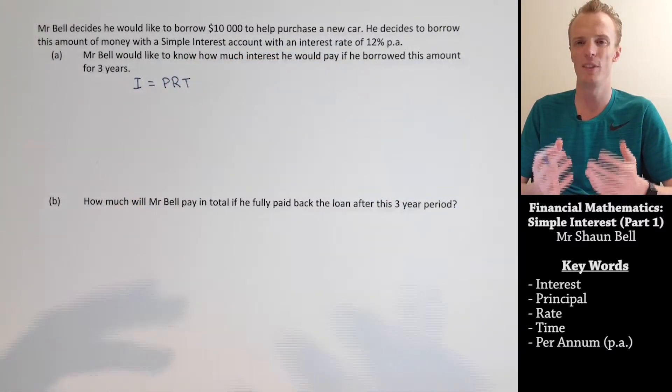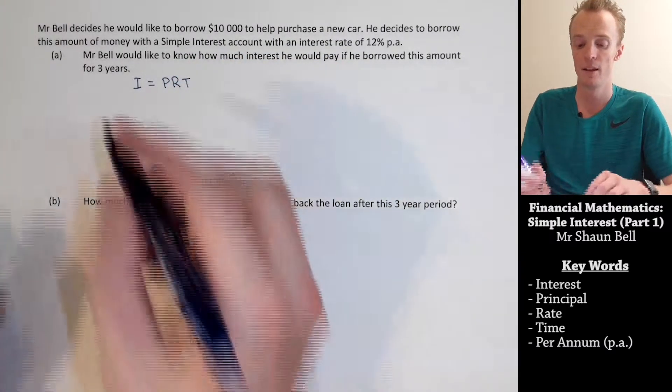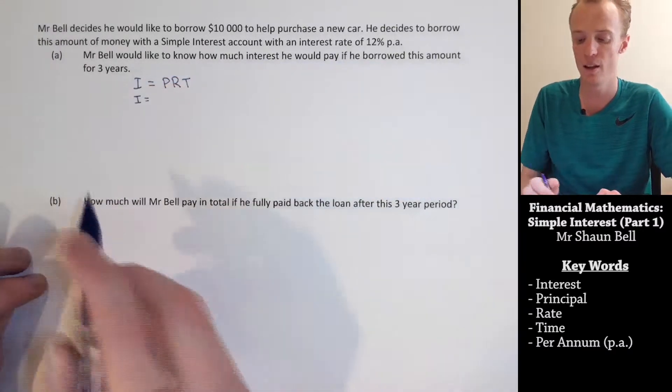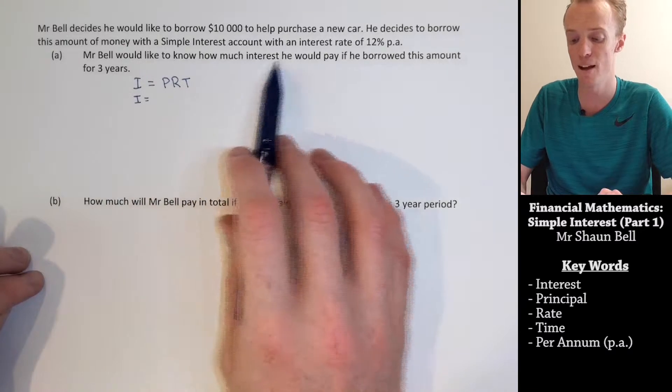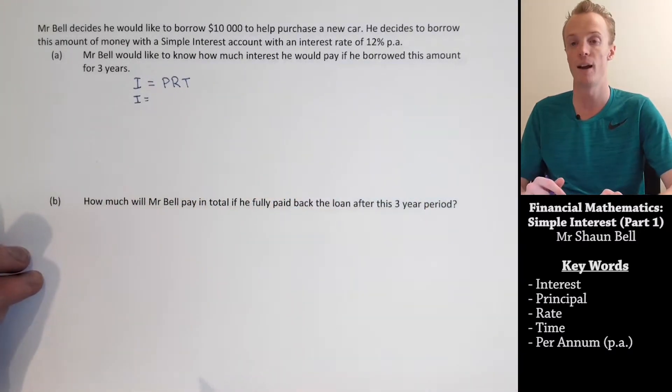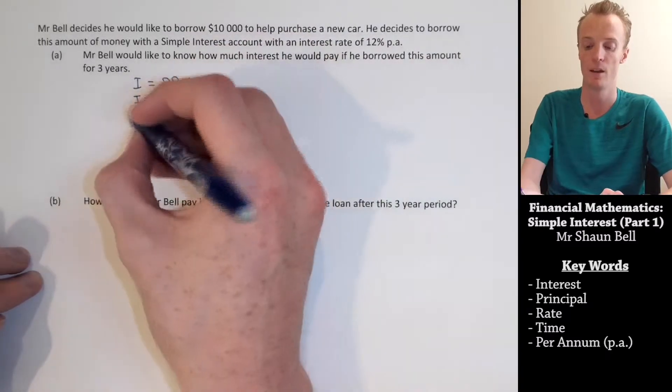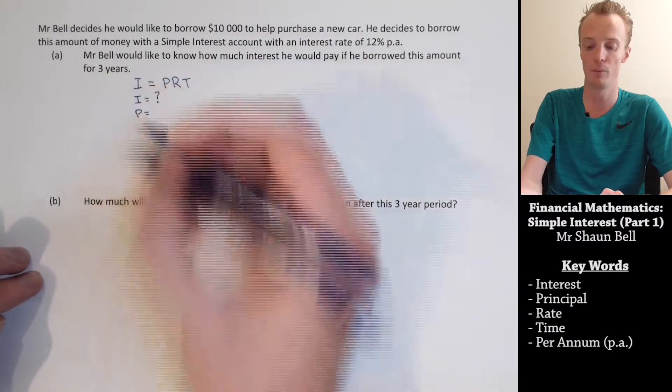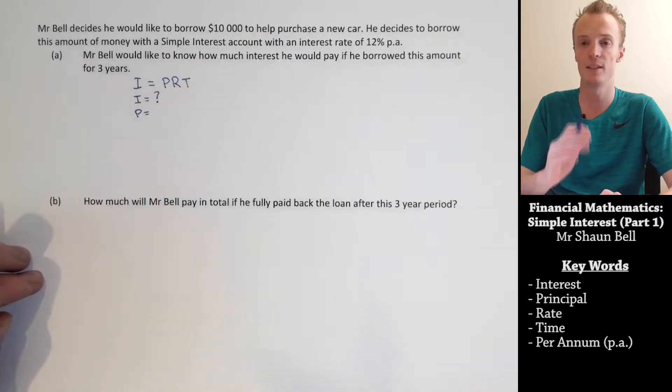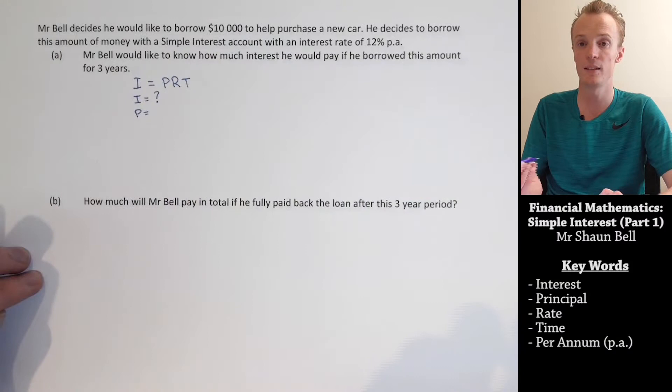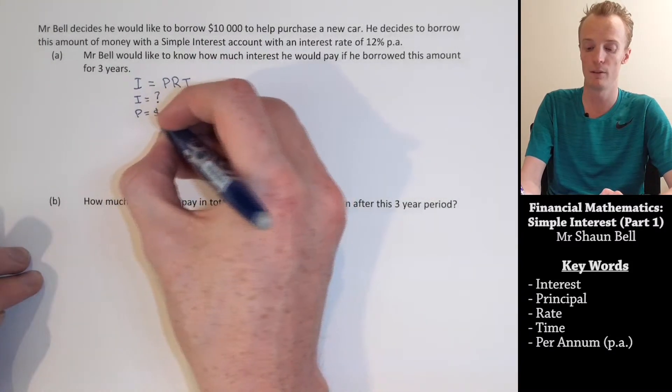From here, I like to record the information that I've been given. So, let's start with I or my interest. Now, here I would like to know how much interest I would have to pay. So, I actually don't know the interest. So, I put a little question mark here. The P stands for principal. Now, my principal is the starting amount that I borrowed here. So, that starting amount is $10,000. So, I record that.